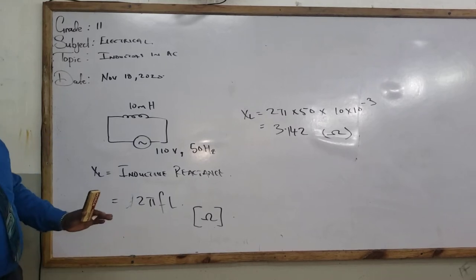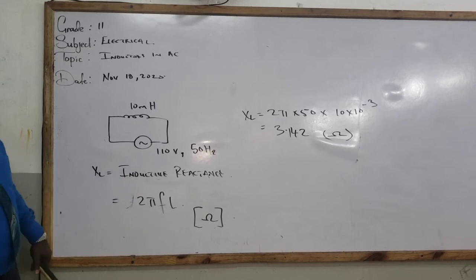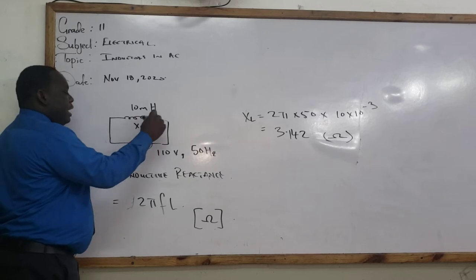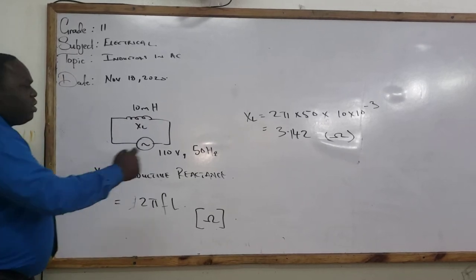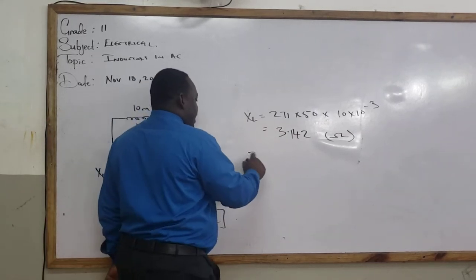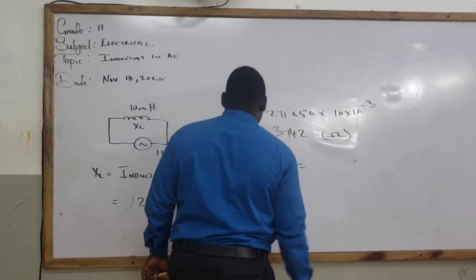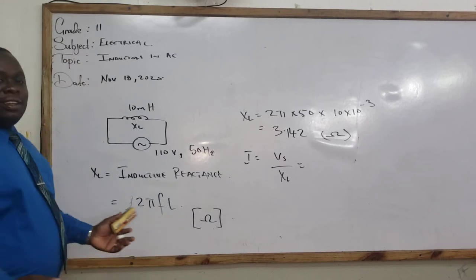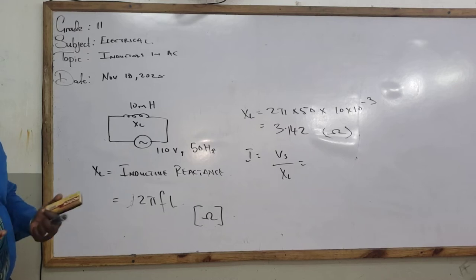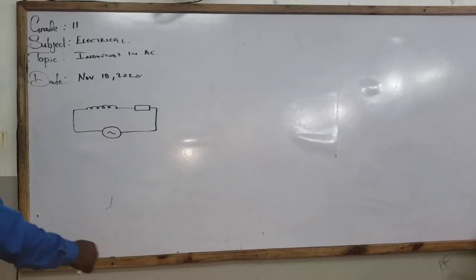So that will give us 3.142 ohms. That is what we will have now for our inductive reactance. Now, this is the only opposition that is taking place in the circuit. XL is the only opposition that is taking place. So you could easily go now and you could actually find the current I. I will be equal to your V supply over XL. And that will become something that is very easy for you to work on. But let us now move on to a little bit more advanced circuit. Let us say we have more components in this circuit.